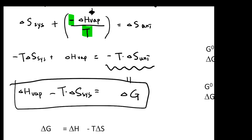These equations represent the delta G equations for the evaporation process. Later on, people actually generalize these equations — not just for the evaporation, but for any chemical reactions — you can write the delta G in a very similar form. So you've got delta G equals delta H minus T delta S.